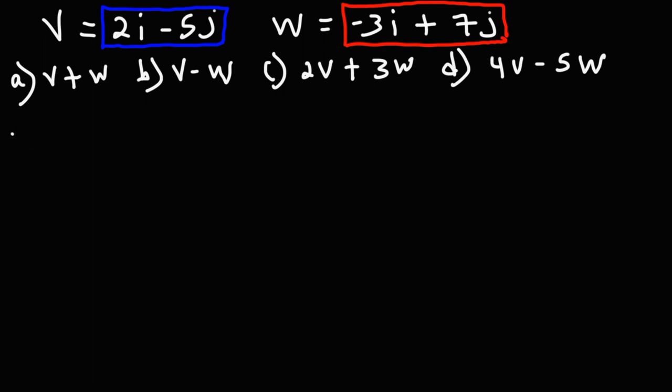Let's perform the indicated operations. Let's start with part a: add v and w. So it's 2i minus 5j plus negative 3i plus 7j. For this problem, all we need to do is combine like terms. We can add 2i and negative 3i, which is negative i.